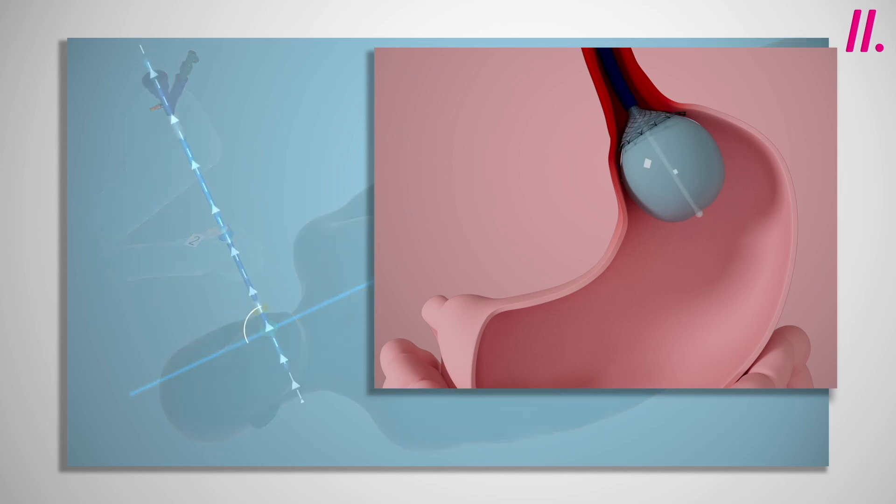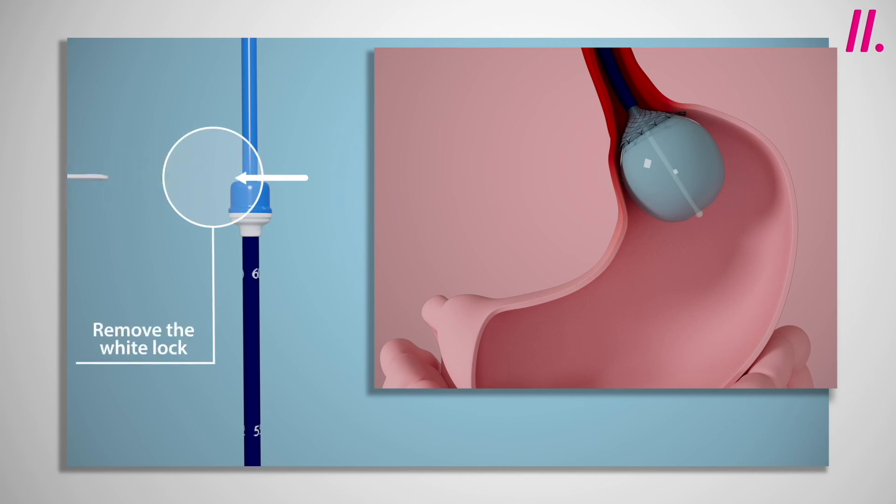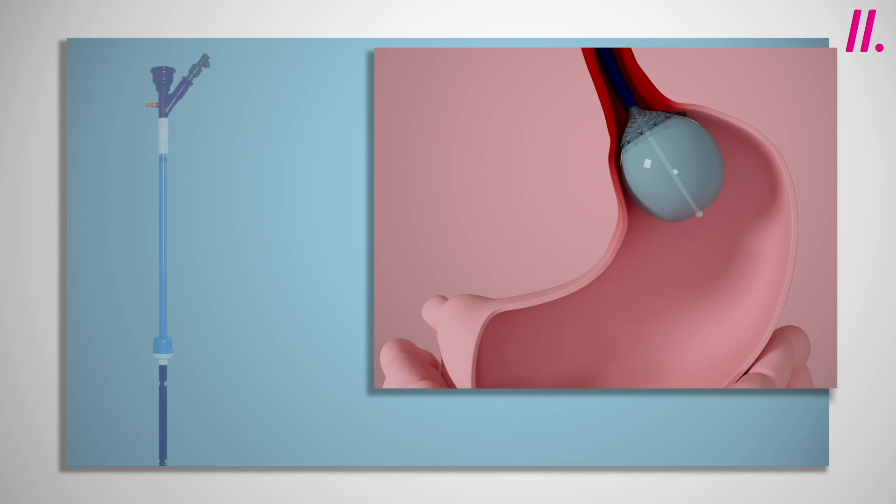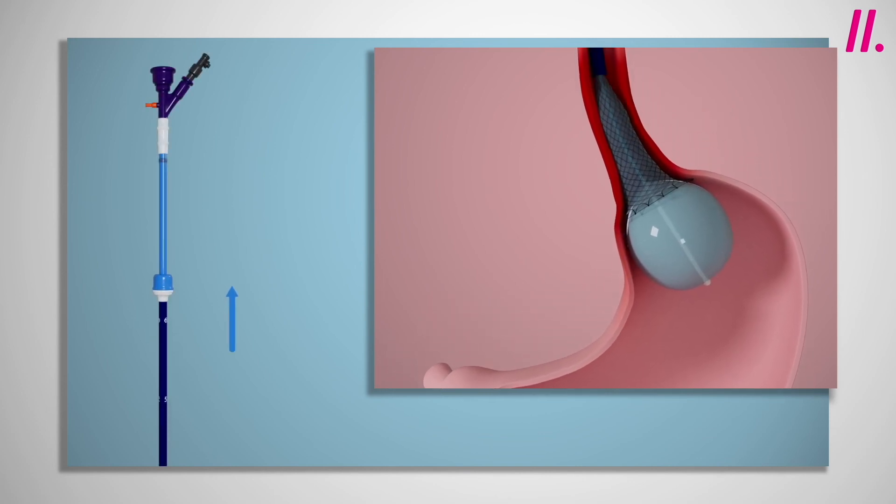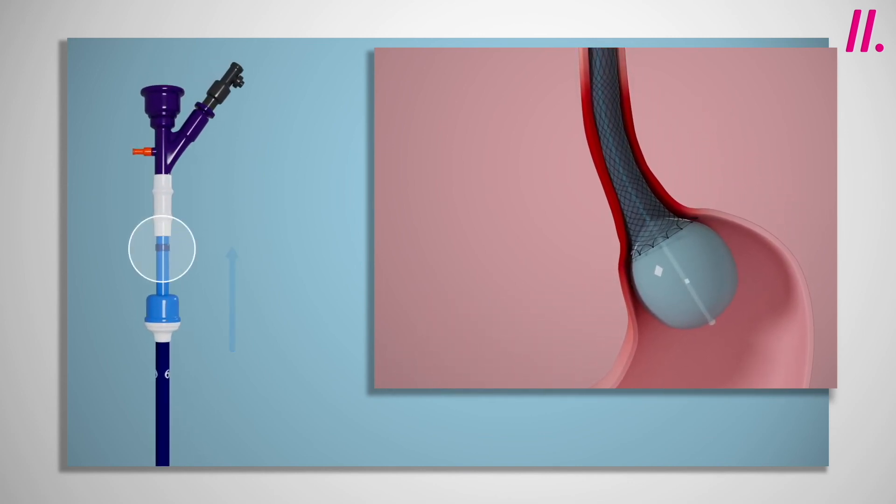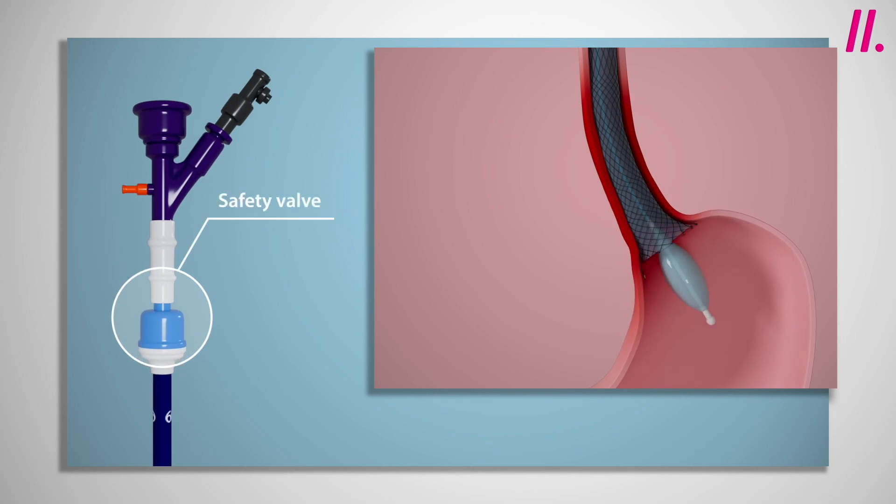The white lock, numbered 2, is then removed, and whilst maintaining modest traction on the entire system, the blue handle should then be pulled smoothly towards the end of the system, engaging over the safety valve. This deploys the stent and deflates the balloon.